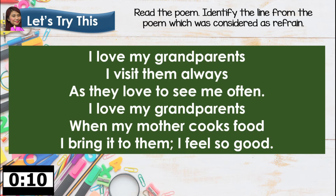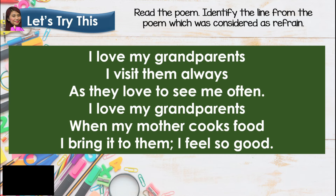Let's have our next poem: 'I Love My Grandparents.' 'I visit them always, as they love to see me often. I love my grandparents. When my mother cooks food, I'll bring it to them. I feel so good.' From this poem, which line is being repeated? Type your answer in the comment box. The correct answer is: I love my grandparents. This line is being repeated in the fourth line. If this is your answer, well done!